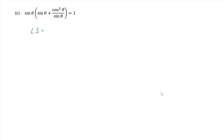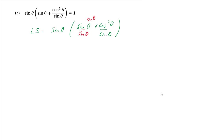Let's go to the next example. Clearly the left side is more complex, so we can start there. So I have sinθ times sinθ plus cosθ over sinθ. I don't need an identity to start this one, but I do need to find a common denominator. I'm going to multiply the first term sinθ by sinθ and divide it by sinθ. That gives me sin²θ plus cosθ all over sinθ. We can cancel the sinθs.